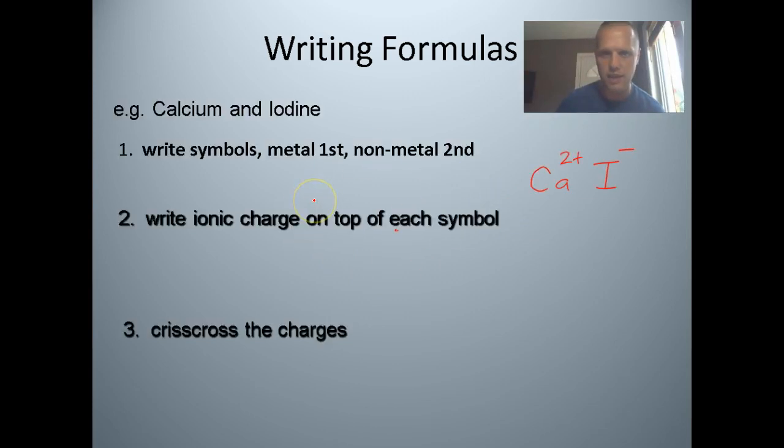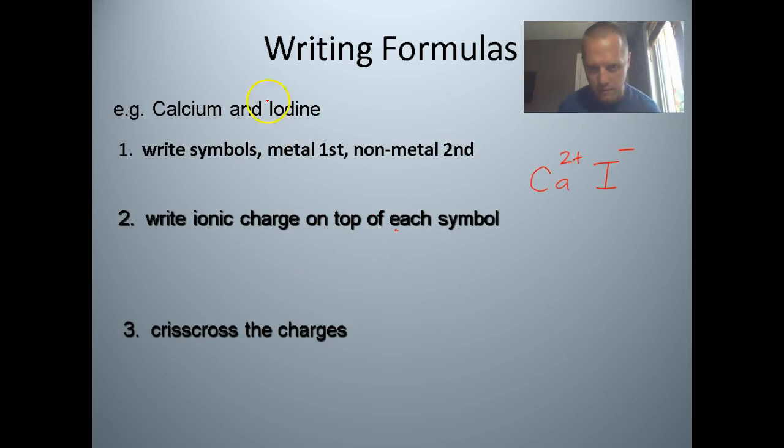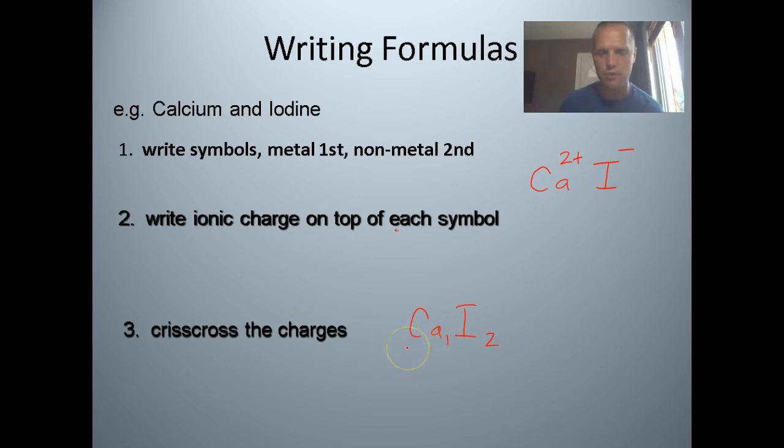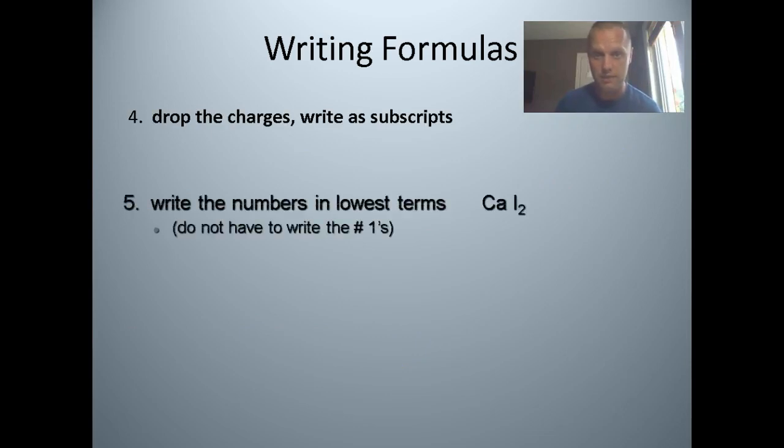What we're going to do now is we're going to criss-cross the charges. So I'm going to bring down the one, which was here, and it ends up going here. And I'm going to bring down the two here. So that means that one calcium is going to match up with two iodides. Then what we're going to do is we're going to drop the charges and write as subscripts. So that's CaI2. And then we get rid of the ones, so we have no ones. So it's CaI2, and that's the answer.